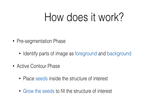You can pause it, change its parameters, carry on. If you don't like the way it's going, you can go backwards, reset, start over, try something different. The user will place seeds inside the structure of interest after this pre-thresholding that gets rid of things you definitely don't care about. You place the seeds inside the structure of interest and then they're grown by the algorithm until it fills the structure that you're trying to segment.